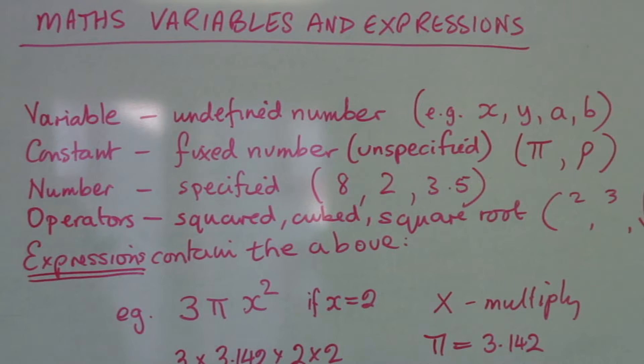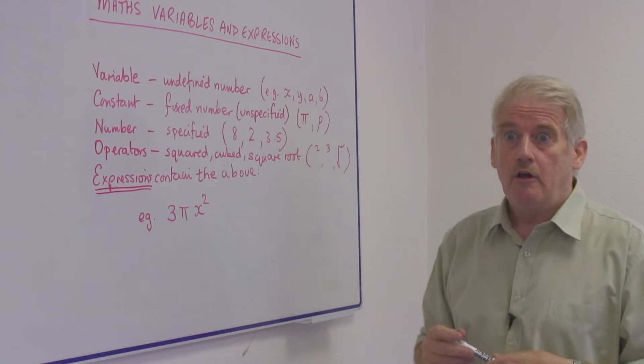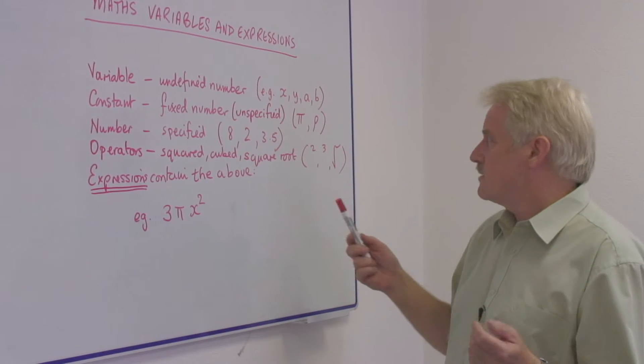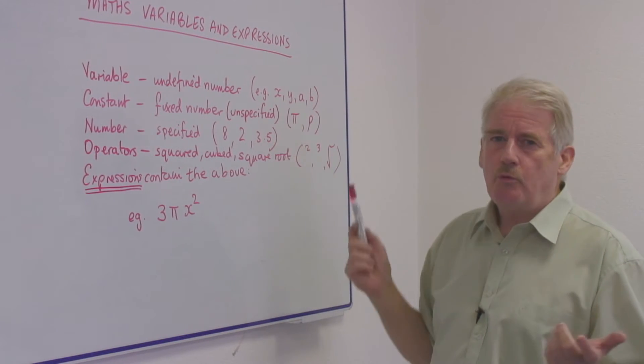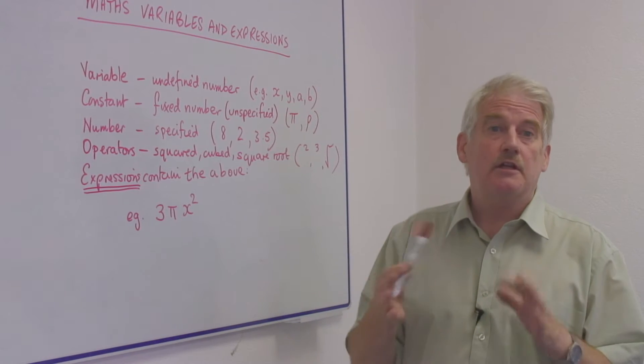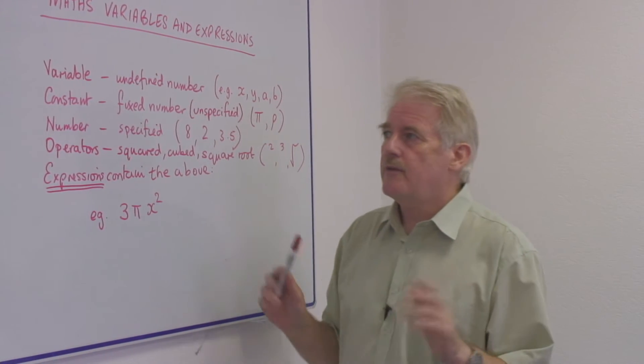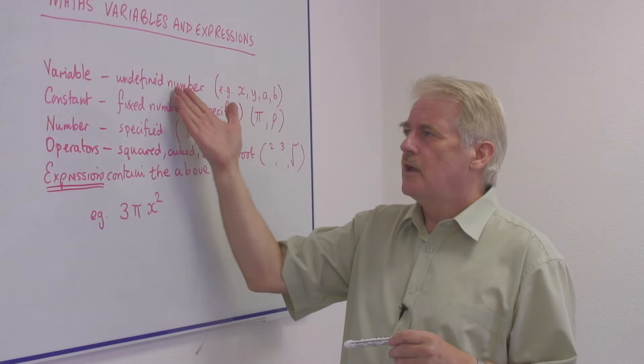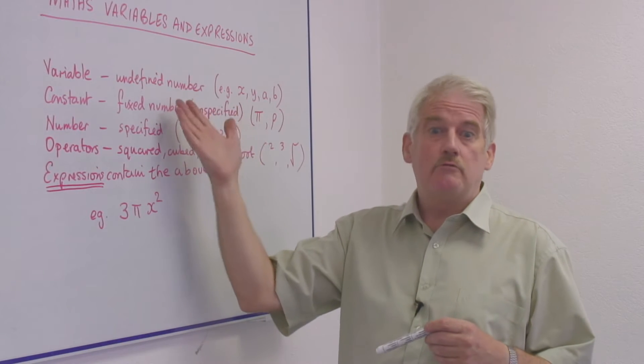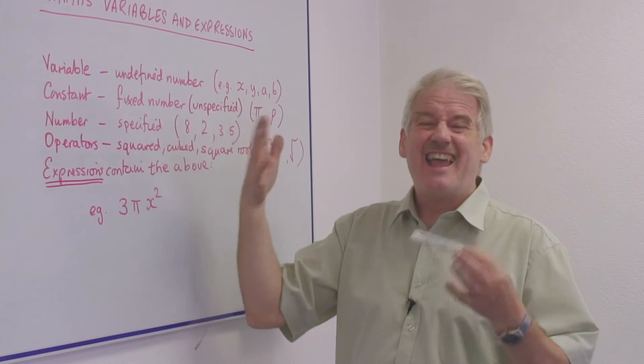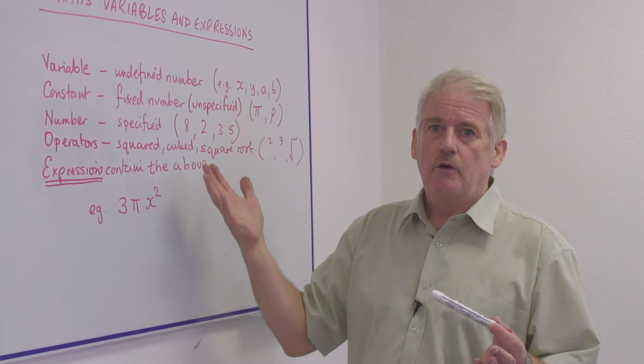The variable is some kind of undefined number, and we usually in algebra use a letter for that—x or y or a or b, but it doesn't have to be. It can be a different symbol. It might be a Greek letter, something of that kind, but it's a variable. That means the letter represents a number of some kind, always the same number.